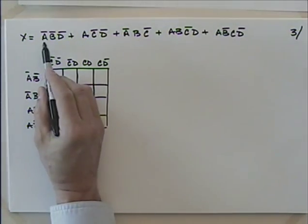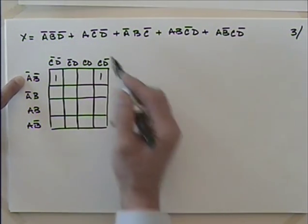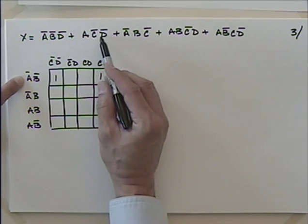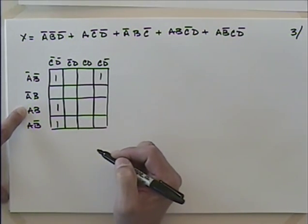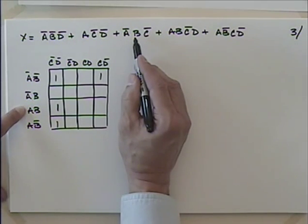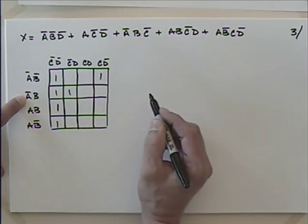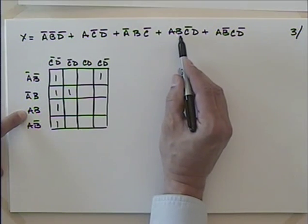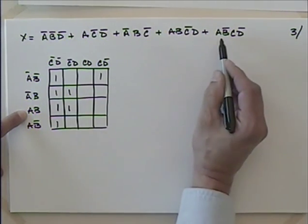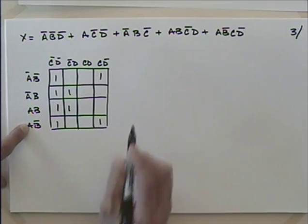Looking at the first term, not-A not-B: I'm in the first row with not-D, so I pick up ones there. The next term, not-C not-D: I'm in the first column, and anywhere I have an A, I pick up a couple more ones. Then not-A B in the second row — anywhere I have a not-C gives ones. Then A B not-C D gives one more, and A not-B C not-D gives the last one.